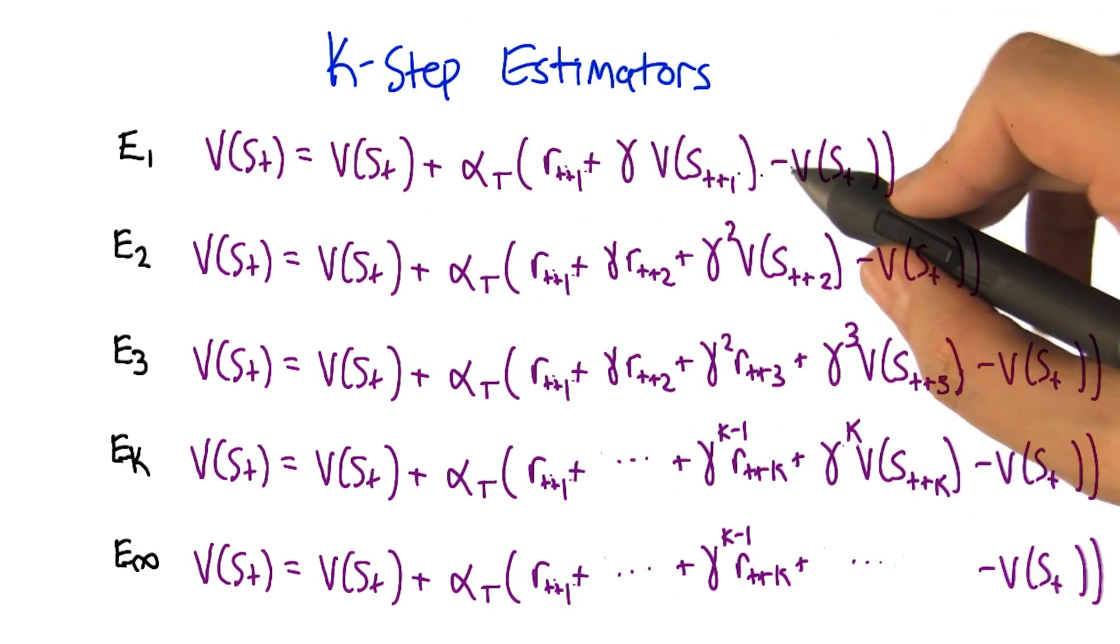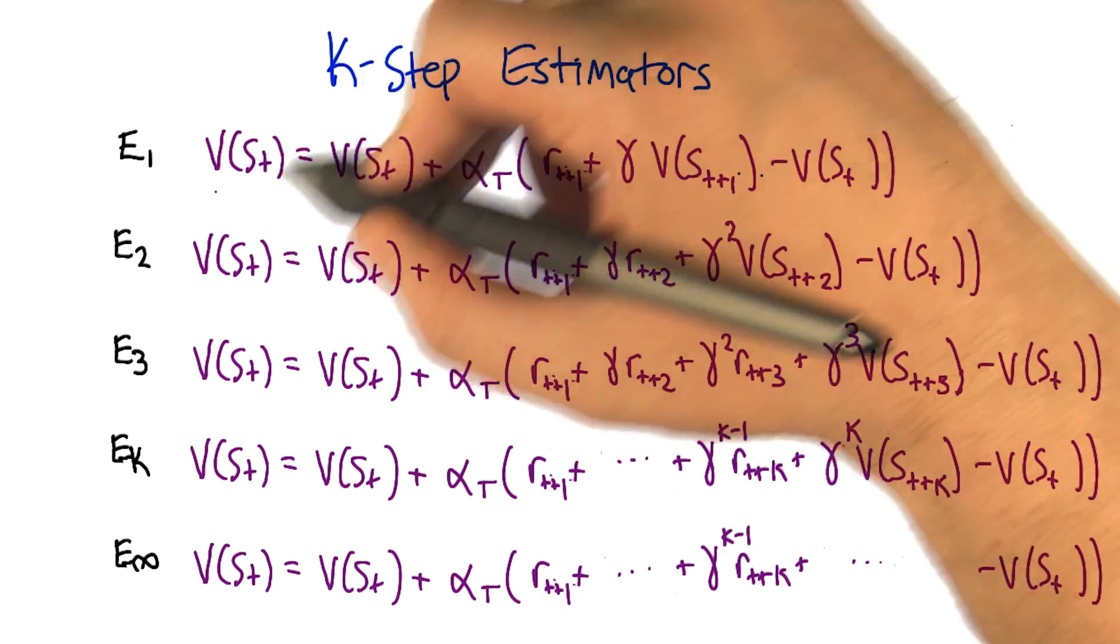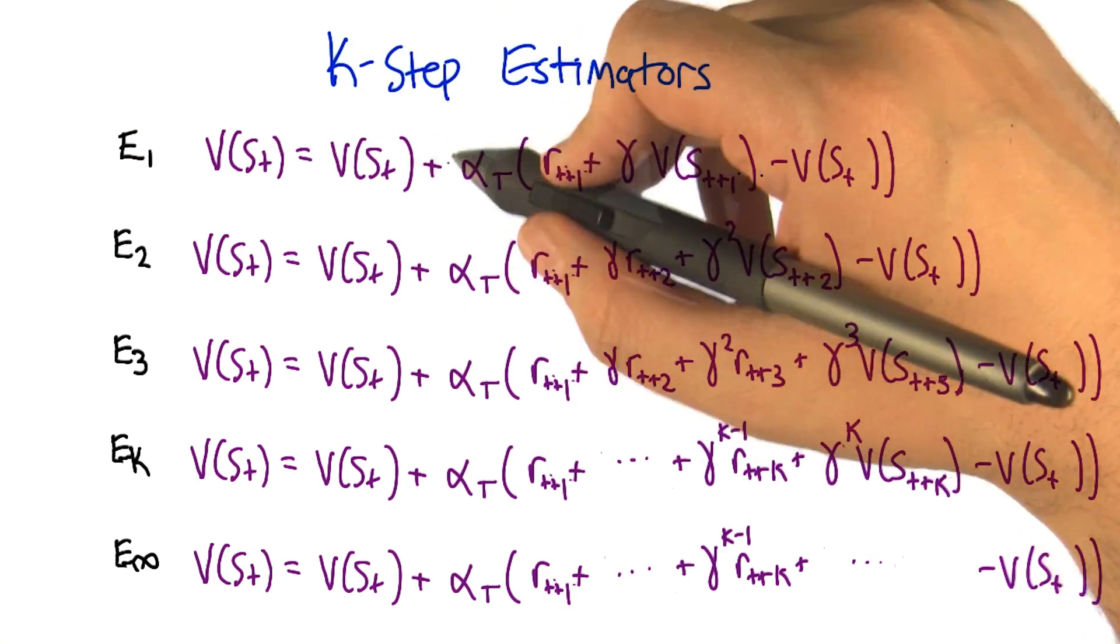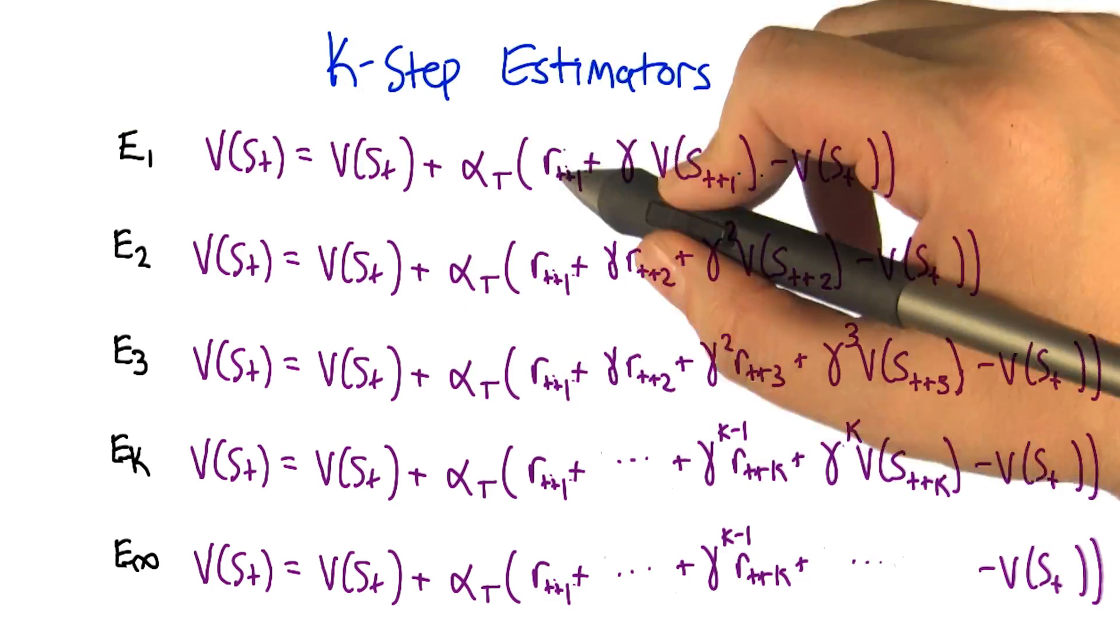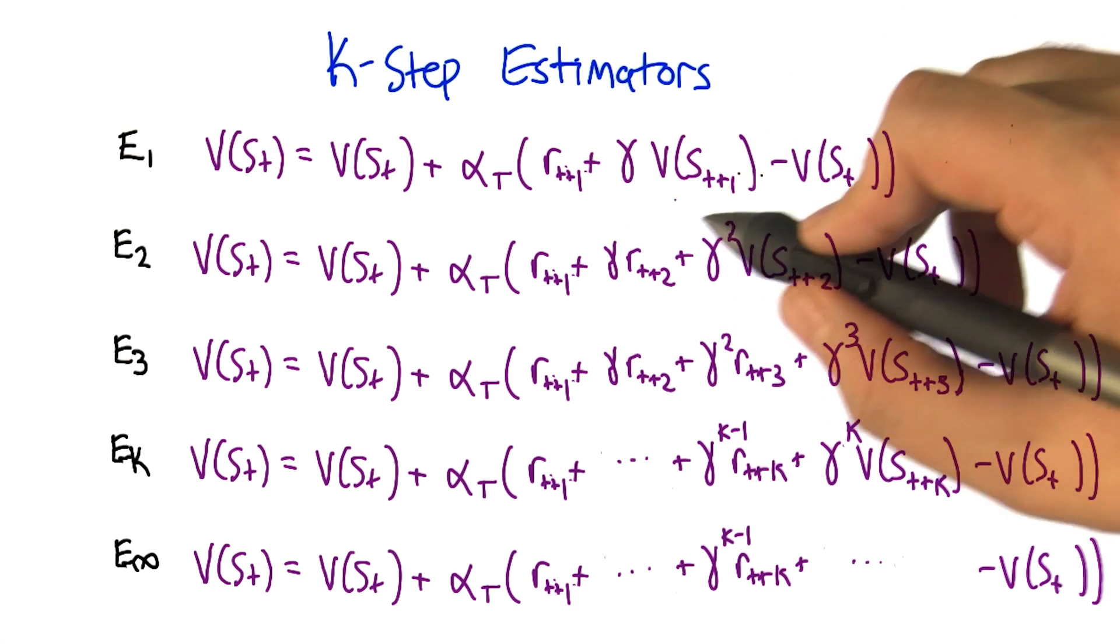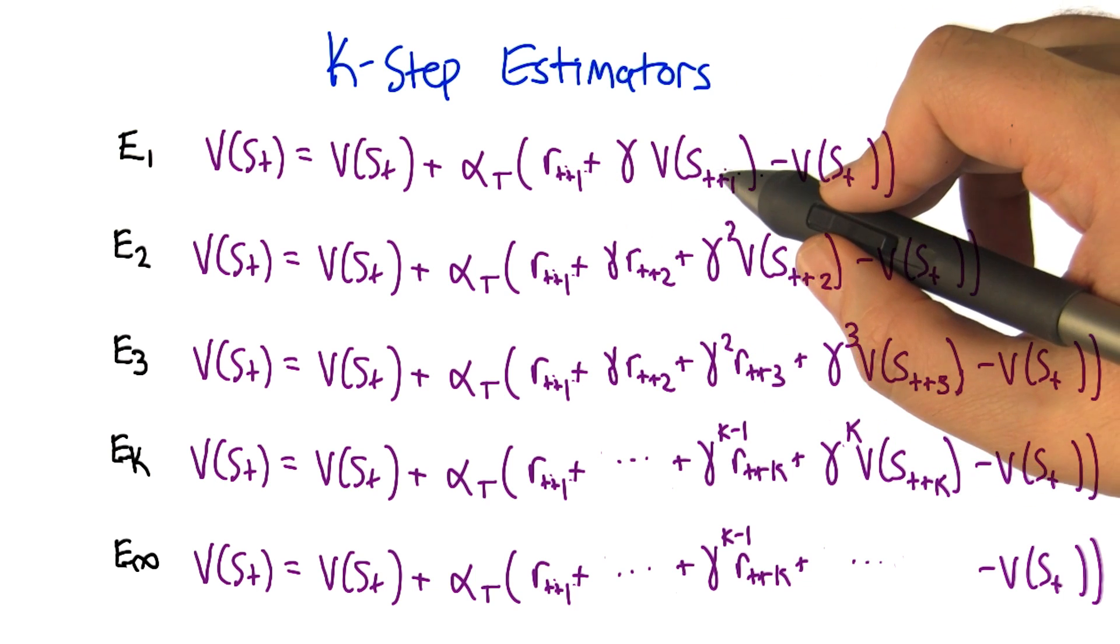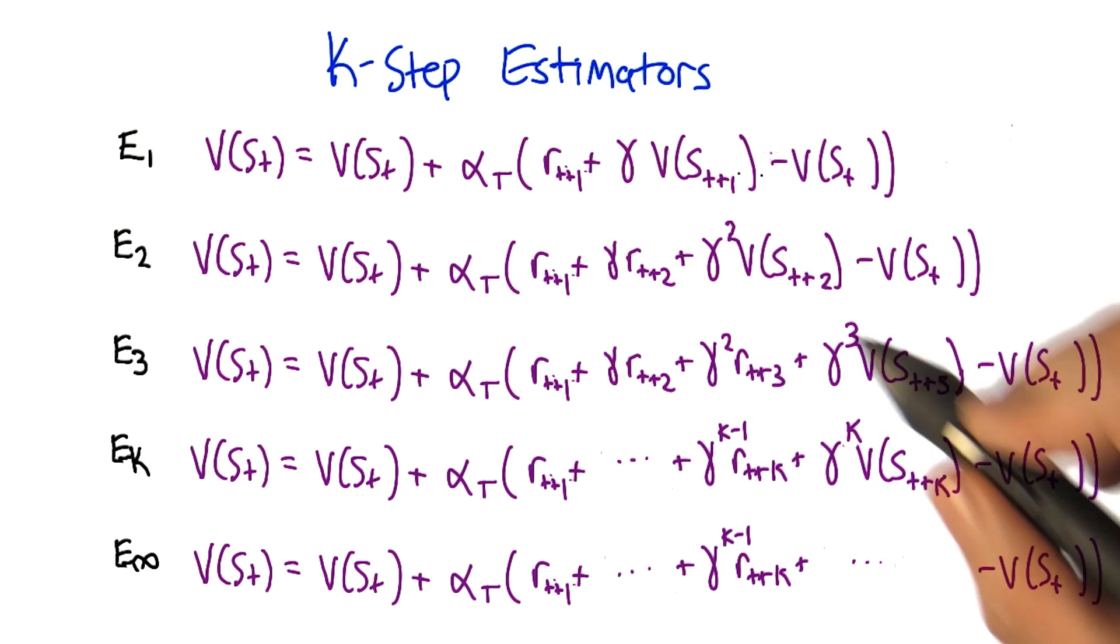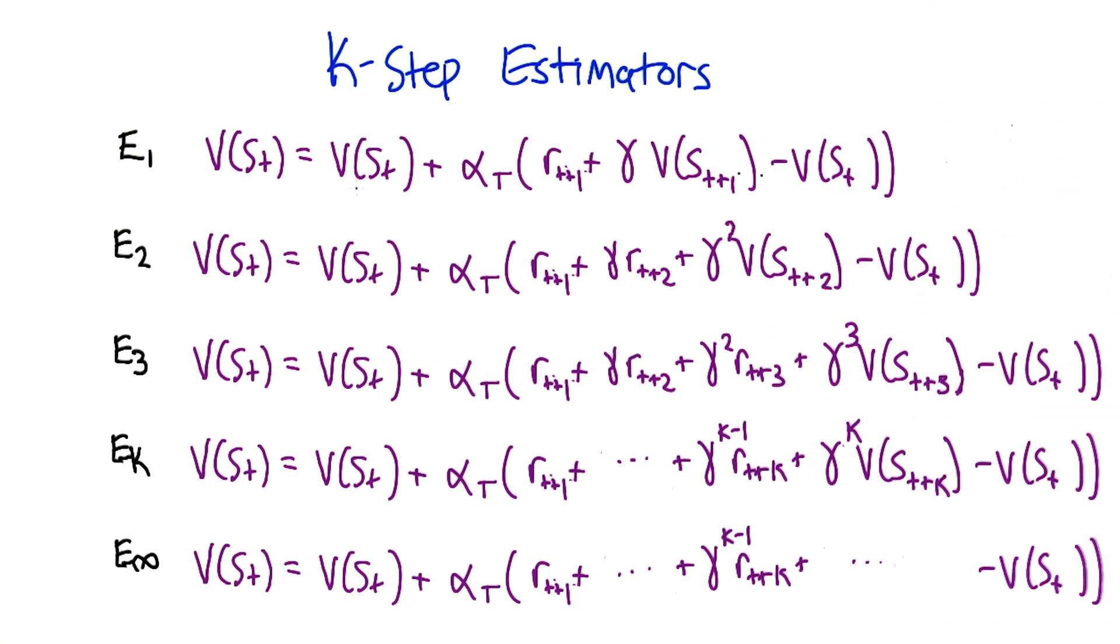So let's look at this first estimator here. It says that we're going to estimate the value of a state that we're leaving by moving it a little bit in the direction of the immediate reward plus the discounted estimated value of the state that we landed in. And we're going to just move a little bit in that direction. So do you recognize this? Have you seen this before?